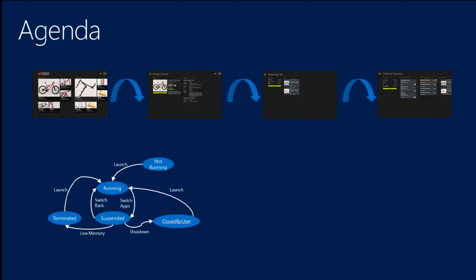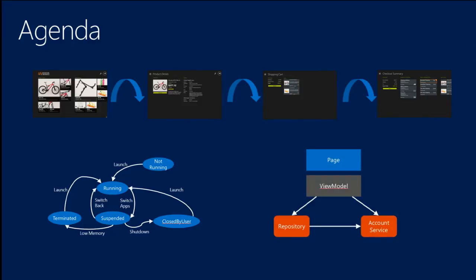The first half of the talk I'll be sticking to straight Windows Store app programming, putting all the code in the code-behind of the pages. Towards the end I want to ask: how many of you have had exposure to the Model-View-ViewModel pattern? Good number of you. So towards the end I'll show how that looks different, and specifically how Prism can help manage navigation in the context of an MVVM app.